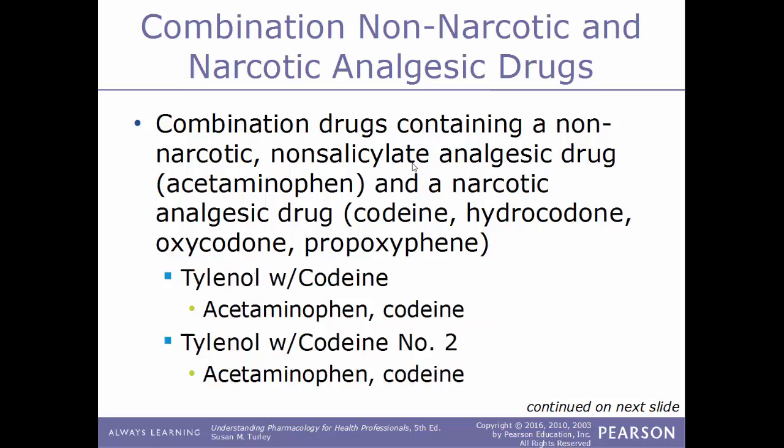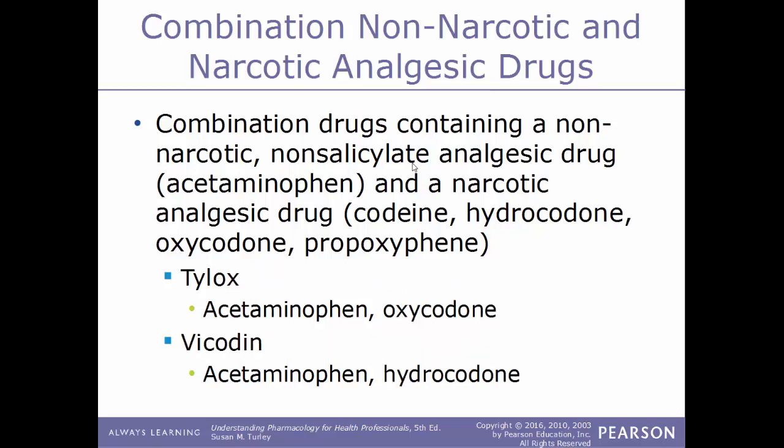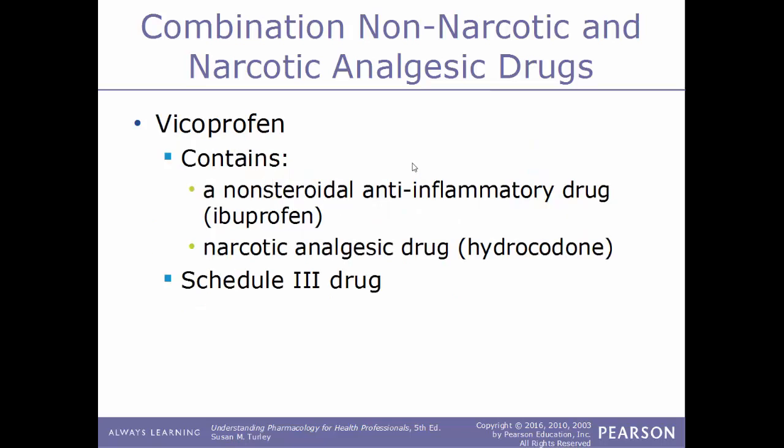Other combinations include Tylenol with codeine, which is obviously a combination of acetaminophen with codeine. It comes in several strengths: Tylenol with codeine number 2, number 3, and number 4. All four have the same components but differ in overall strength. Tylox is a combination of acetaminophen and oxycodone, and Vicodin is a combination of acetaminophen and hydrocodone. Another combination is Vicoprofen, which is a combination of the NSAID ibuprofen plus hydrocodone — this is also a Schedule 3 drug. In a combination drug name, the 'W/' symbol stands for the word 'with.'